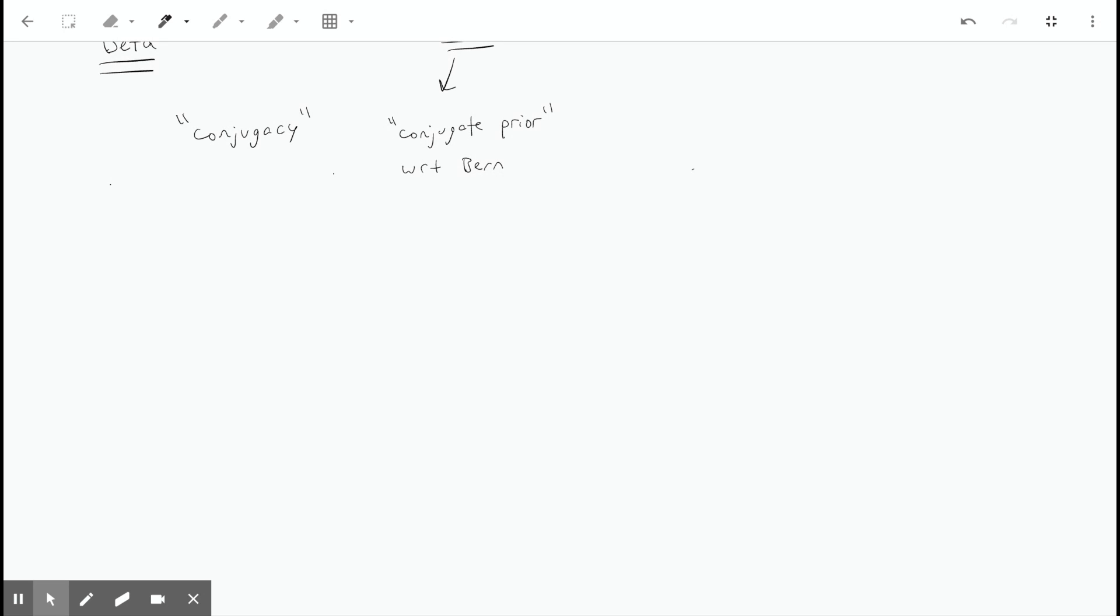So I promised that we would talk about the MAP, the maximum a posteriori value of mu. That's just the argmax of our new posterior, which is the argmax of the beta of n1 plus alpha, n0 plus beta.